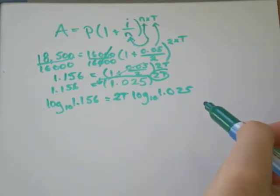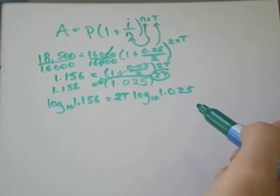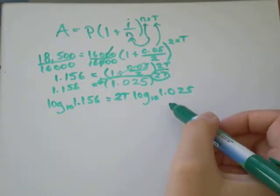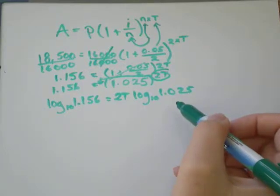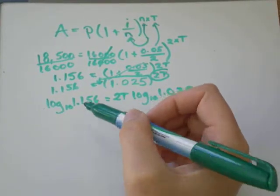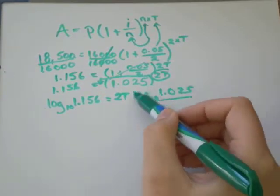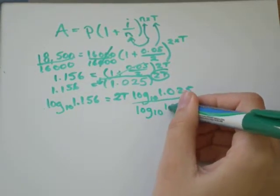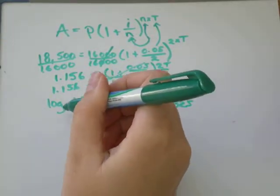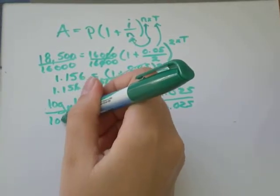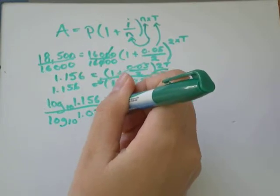Log base 10 of 1.156 is just some number, it's a decimal. And so is log base 10 of 1.025. So I'm just going to divide both sides by this log base 10 of 1.025. They're both just numbers, so I can do that.